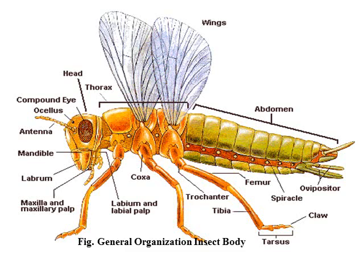The head structure has different types of appendages like cerci, legs, wings, mouth parts, antennae, compound eyes, and simple eyes. These are some external appendages which have their unique function during insect behavior.